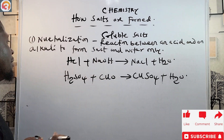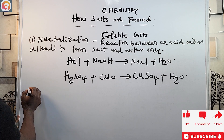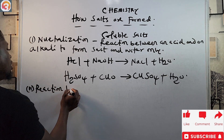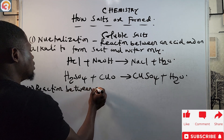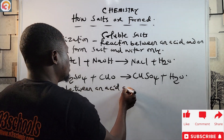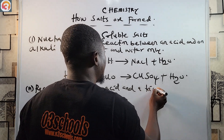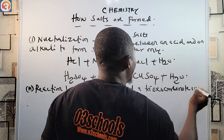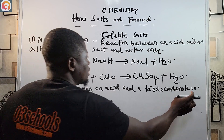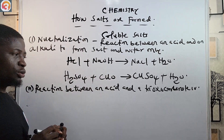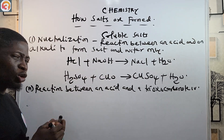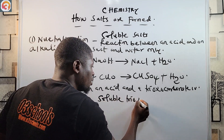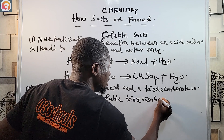Another method used to produce soluble salt is the reaction between an acid and a trioxocarbonate. In this case, you take a soluble trioxocarbonate and titrate it against the acid.